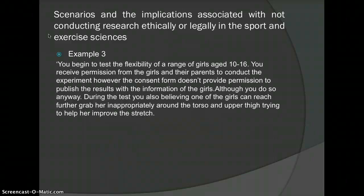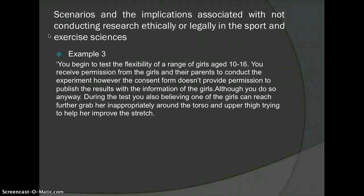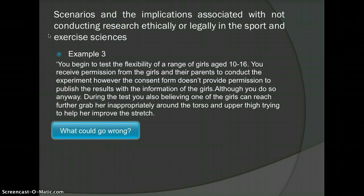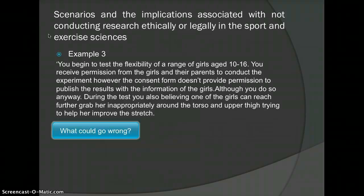Example 3: You begin to test the flexibility of a range of girls aged 10–16. You receive permission from the girls and their parents to conduct the experiment; however, the consent form doesn't provide permission to publish results with the girls' personal information, although you do so anyway. During the test, when you believe a girl can reach further, you grab her inappropriately around the torso trying to help her improve the stretch. What could go wrong? Confidentiality: you lack permission to publish results but do so anyway. Conduct: inappropriately grabbing a young girl is the opposite of general professionalism. The girl may become injured due to overstretching, and may feel uncomfortable with being grabbed in such a way.